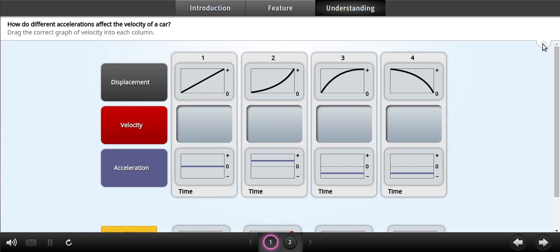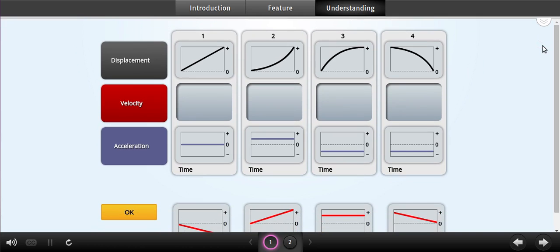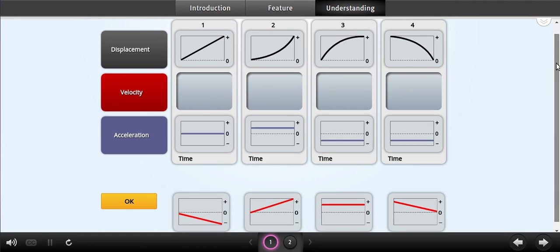This column shows graphs of displacement and acceleration for the same moving car. Which graph of velocity matches each situation? Drag the correct graph into each space, then click OK.